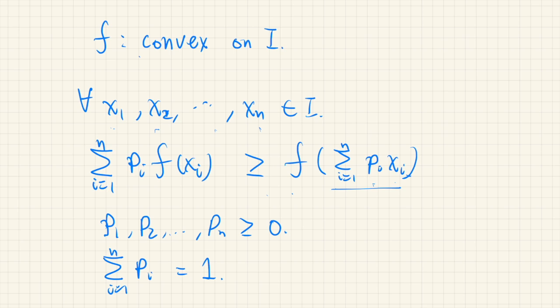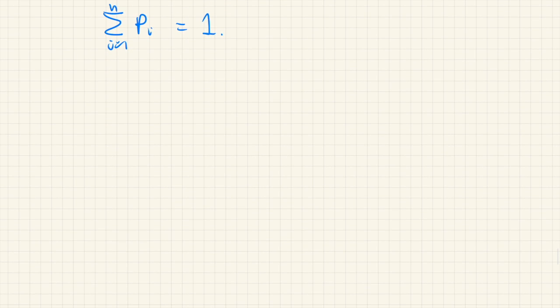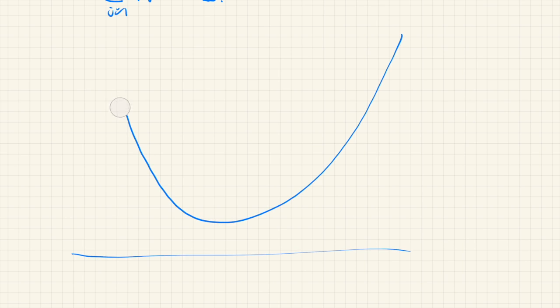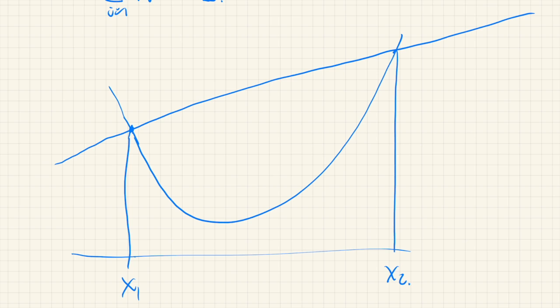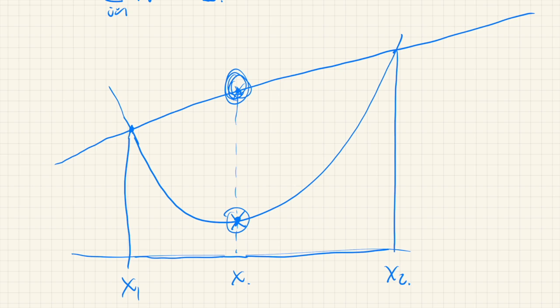What does it mean for a function to be convex? Here's what it means intuitively. Suppose we have a function defined on the interval between x1 and x2. If the function looks like this bowl shape, then it's convex. What it really means is that if we connect the two endpoint values by a line, then any point x between x1 and x2 has f(x) less than or equal to the corresponding point on the connecting line.